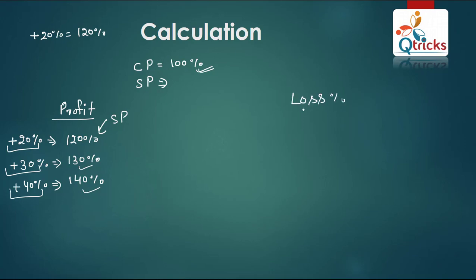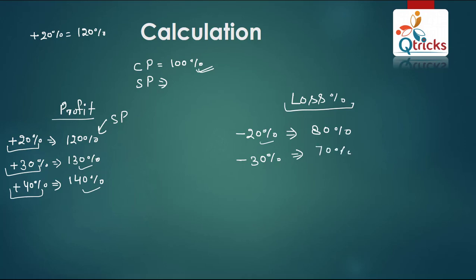Now if you look at loss — if you have 20% loss, then your selling price will be 80% of cost price. Similarly, if you have 30% loss, your selling price will be 70%. Why? Because 100 minus 30 equals 70. The same logic applies: 40% loss means your selling price is 60% of CP. I hope you understand this.